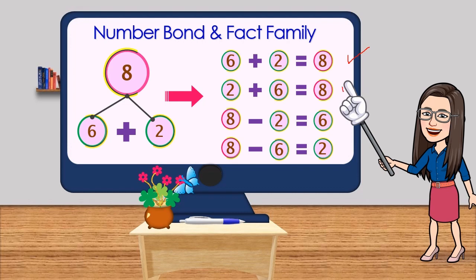then 2 plus 6 is also equal to 8. In reverse, 8 minus 2 is equal to 6, and 8 minus 6 is equal to 2.